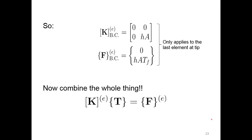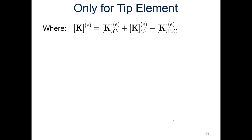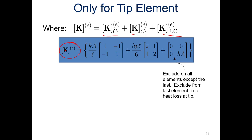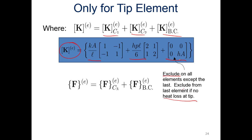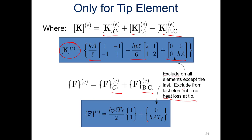So let's combine the whole thing together: we have our stiffness, our temperatures, and our forcing functions. Only for the tip element, we combine all three — the first stiffness matrix, the second, and the third boundary condition matrix. The total element stiffness contribution is one from conductance, one from convection to the side, and one from convection from the tip. On all other elements, we exclude the tip convection matrix — exclude it from all elements except the last if there is no heat loss from the tip. For the forcing function, include the C3 term we already had plus the boundary condition, and exclude the tip boundary condition term if there's no convection from the tip.